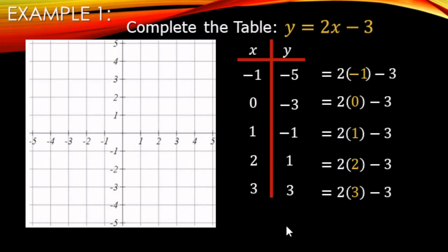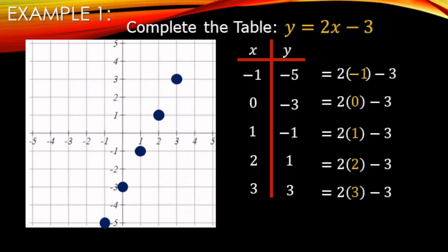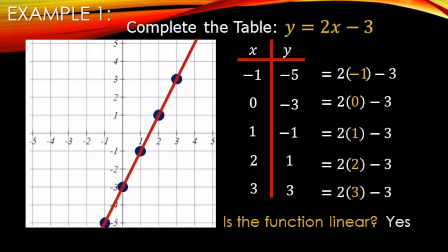Now we think of these as coordinate points. Negative 1 comma negative 5 goes here — negative 1 on x and negative 5 on y. Then 0 comma negative 3, which is actually the y-intercept. Then 1 comma negative 1, then 2 comma 1, and 3 comma 3. We can draw a line through these. Are all the dots in a straight line? Yes — so it is a linear function. The line goes through all the data points we calculated.